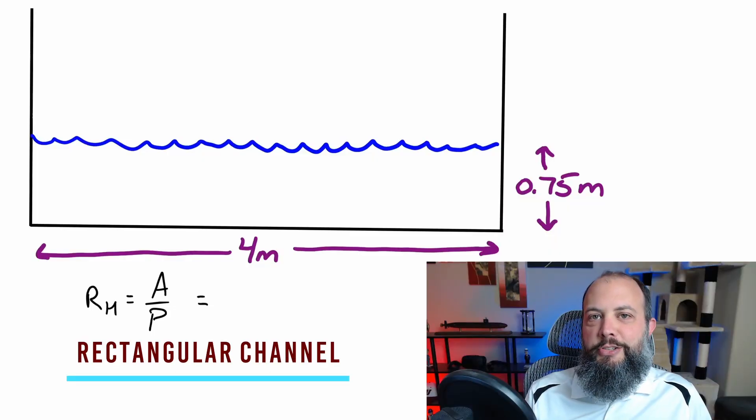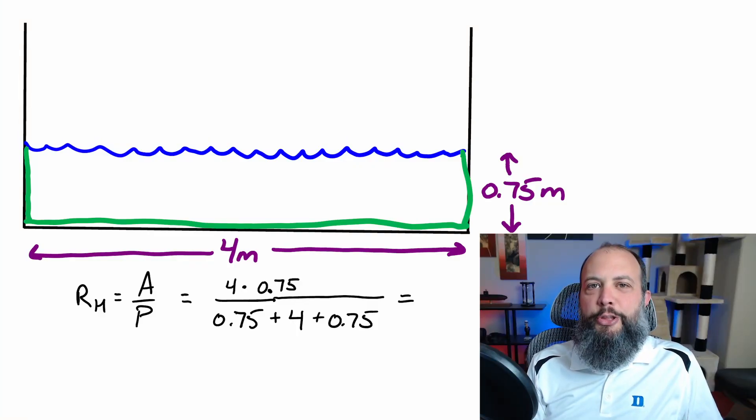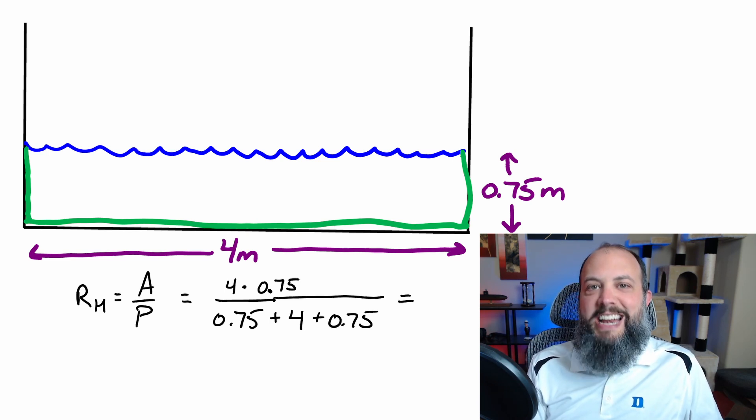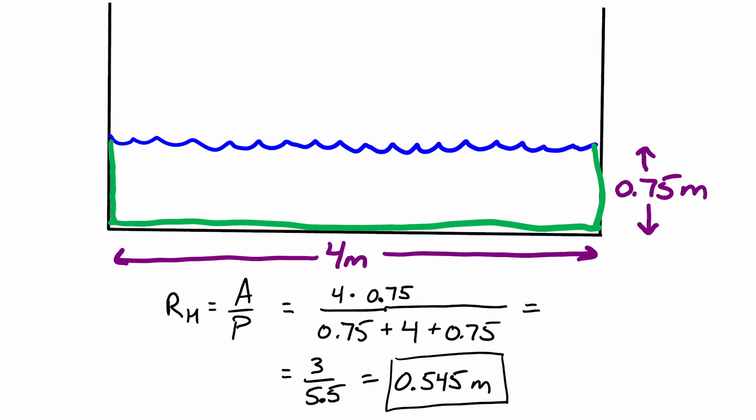Starting off with the rectangular channel: area over wetted perimeter. Area is base times height. The wetted perimeter is then these three green surfaces, so it's not the entire perimeter of the area, only the portion of the perimeter that's actually touching something. The part exposed to the air is not included in wetted perimeter, which gives you for this rectangular channel a hydraulic radius of 0.545 meters.